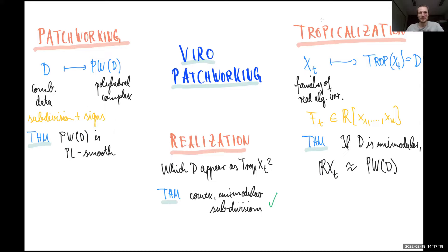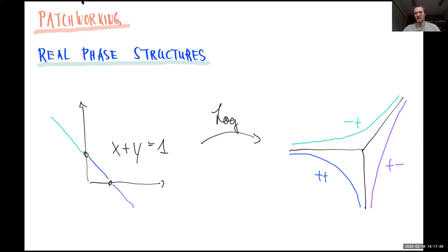The first question is how to generalize the combinatorial data to higher codimensions. In the hypersurface case we use sign information corresponding to the signs of the coefficients in our polynomials, but that's something we do not have at our disposal in higher codimensions in general. So we have to use something slightly different, and the main idea is as simple as it can be.